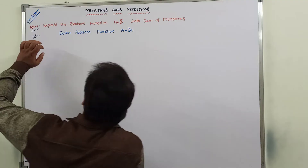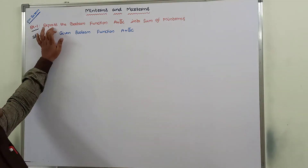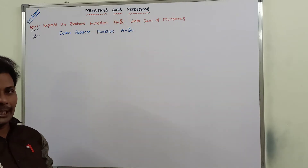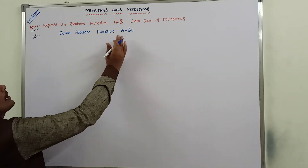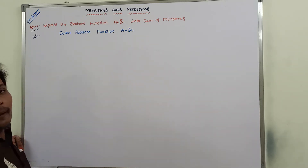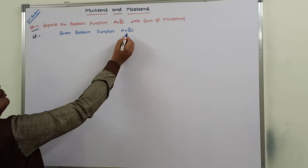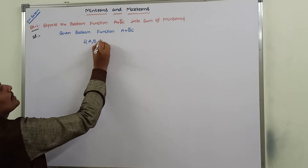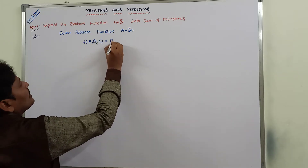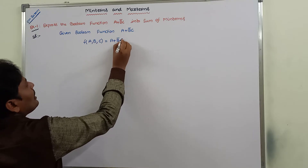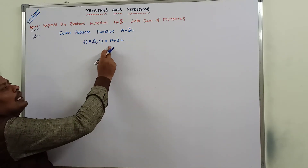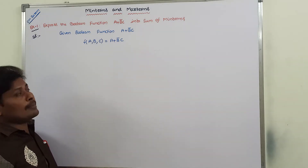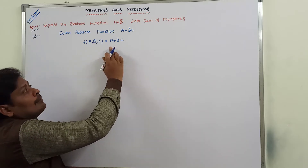In this video we have to solve this example problem: express the boolean function A plus B-bar C into sum of minterms. The given boolean function is f(A, B, C) = A + B̄C. Observing the given boolean expression, it contains three variables and two product terms. A is one product term and B̄C is one product term.